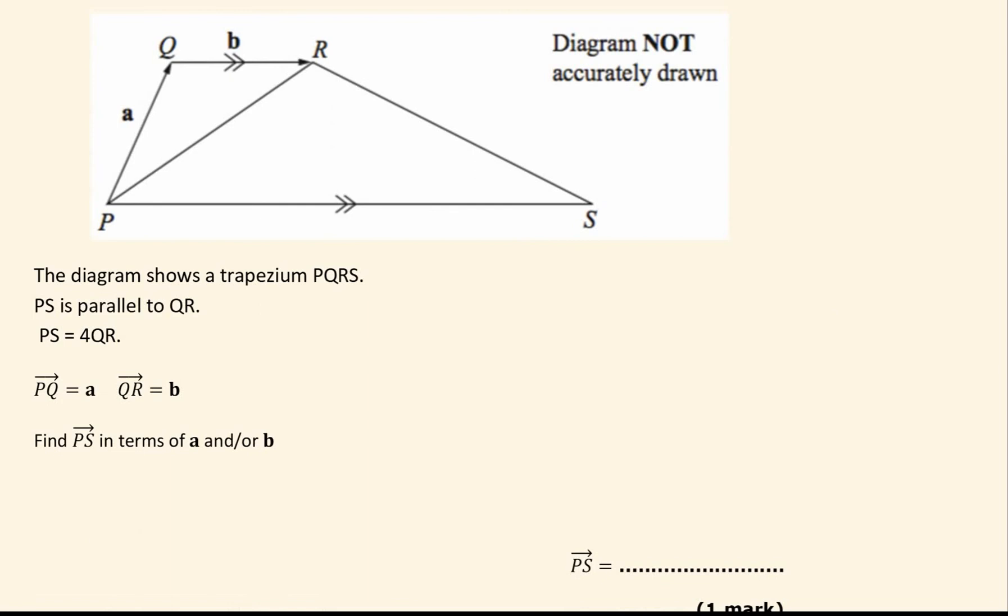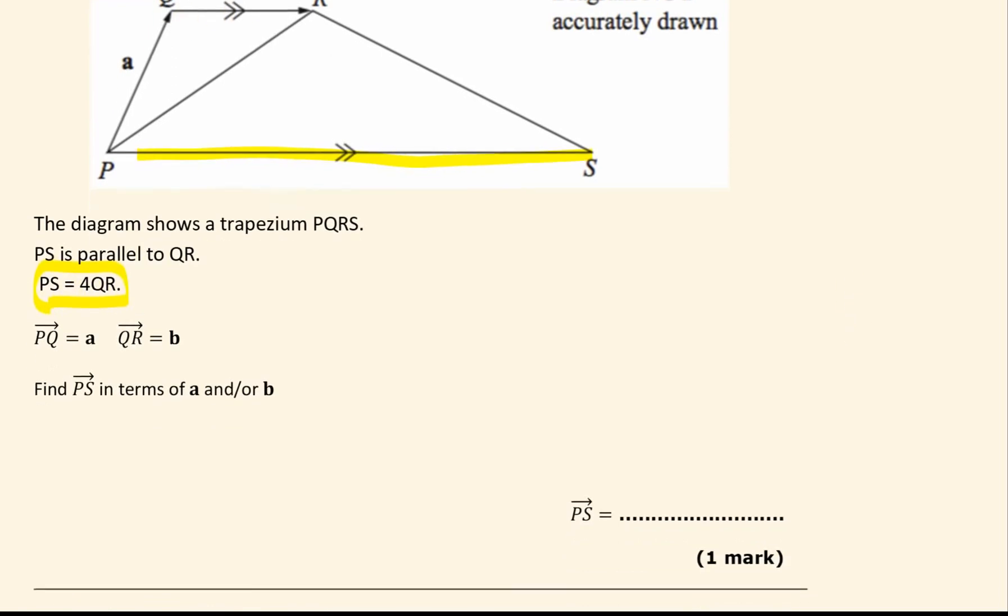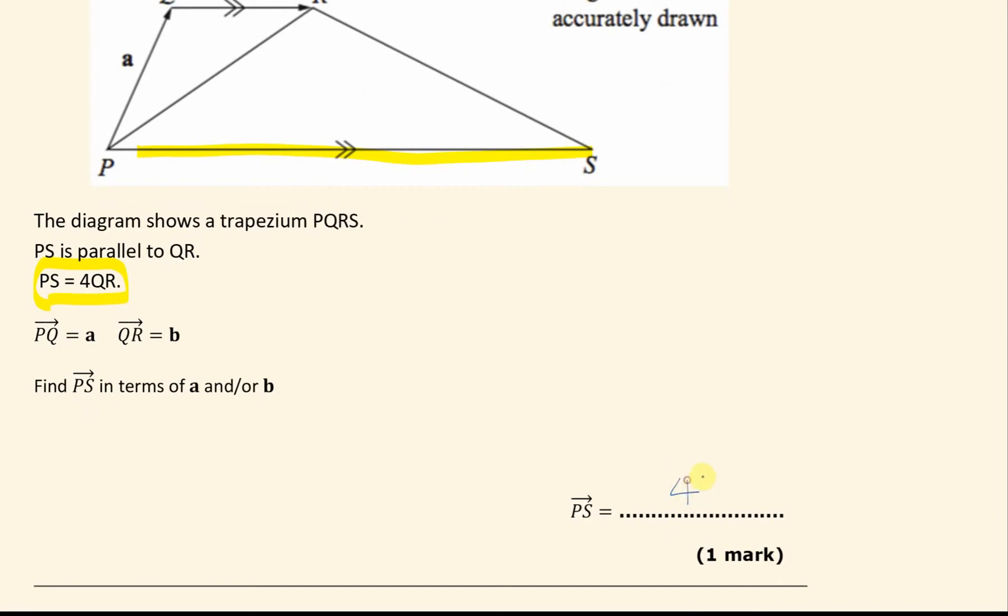OK, same setup, same question again, but here we want the vector P to S. And we are told that P to S is 4 lots of QR, so if Q to R is b, then P to S will simply be 4b. So make sure these little things here can make a big difference.